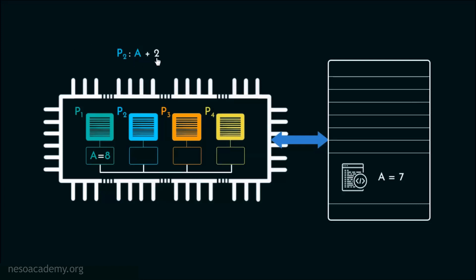Now suppose P2 wants to perform the operation a+2, meaning it wants to increment the value of 'a' by 2. However, since P2 doesn't have 'a' present inside its own private cache yet, it will go ahead and bring the value of 'a' from the main memory into its own private cache. Once P2 has the value of 'a', it can perform the operation, incrementing 'a' by 2 and making 'a' equal to 9.